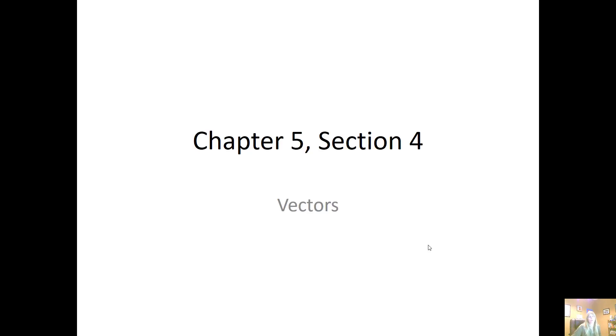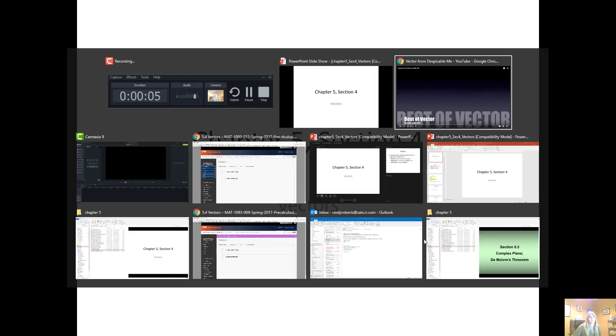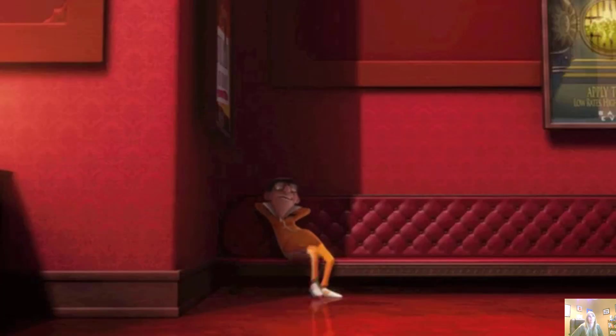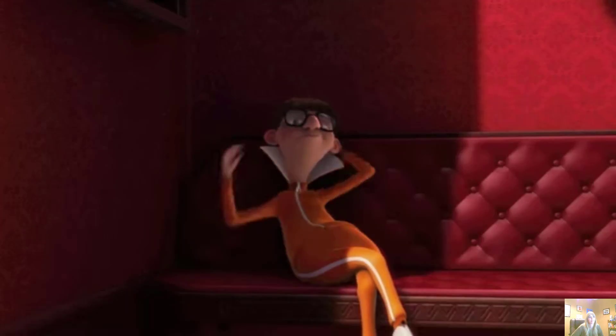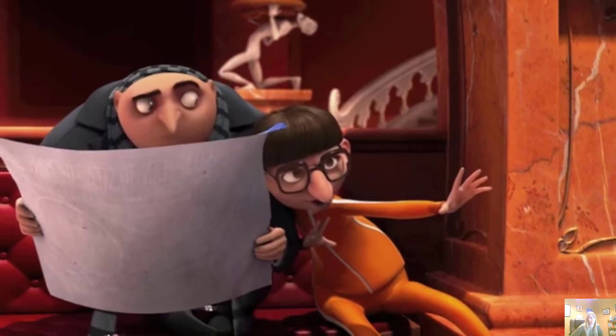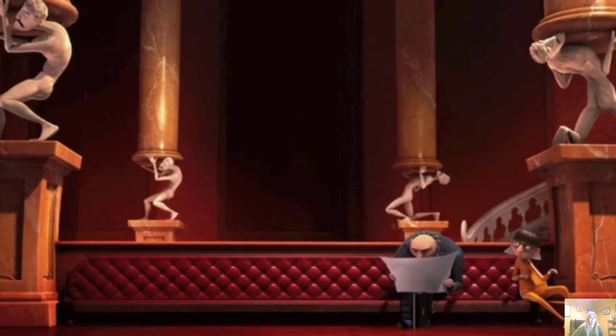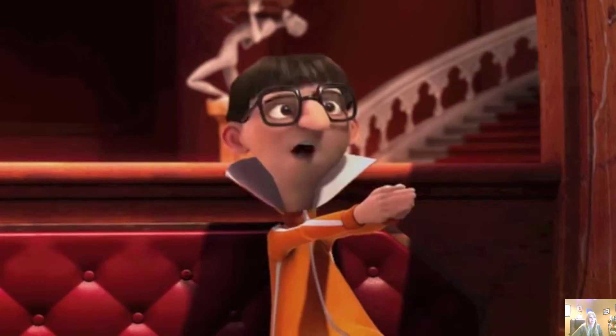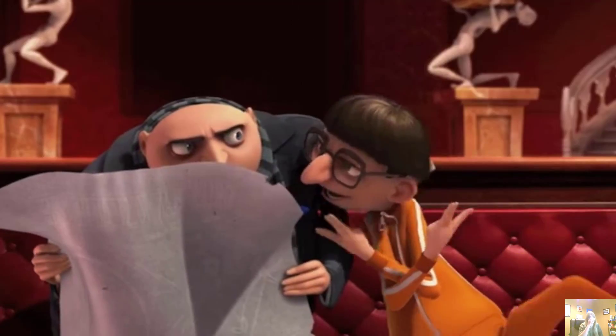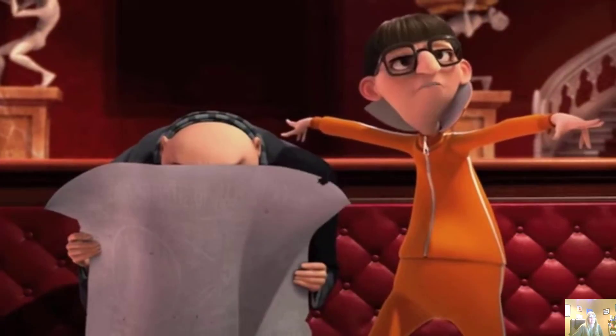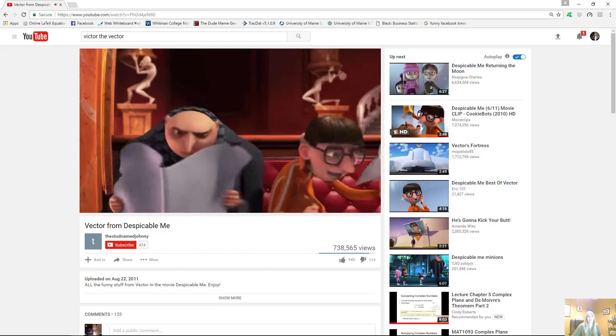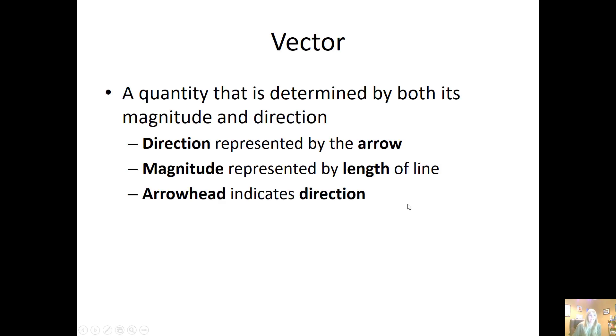Let's look at the section on vectors. So what is a vector? If you saw Despicable Me, you might remember: 'I'm applying for a new villain loan, go by the name of Vector. It's a mathematical term, a quantity represented by an arrow with both direction and magnitude.'